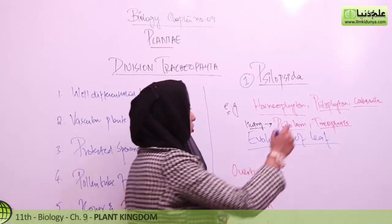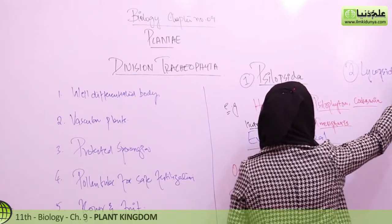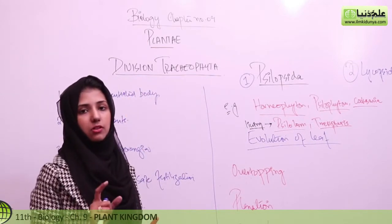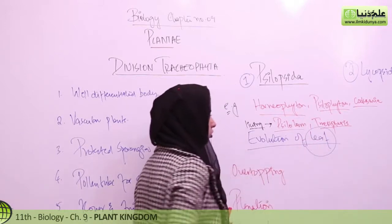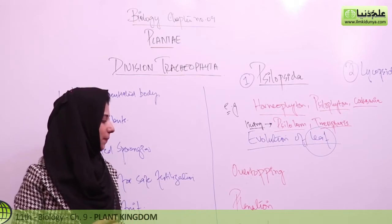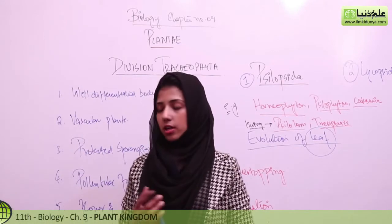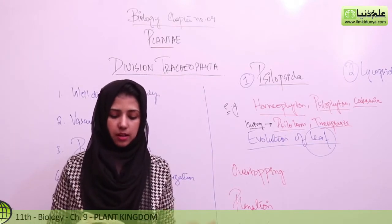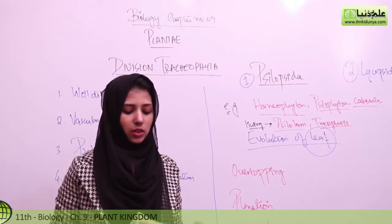The second part of this division is Lycopsida. In Lycopsida, true leaves were present. The evolution from Psilopsida to Lycopsida involved leaf formation. Leaf formation has three basic steps: over-topping, planation, and fusion and webbing. The evolution of the leaf is an important topic. Lycopods were the first plants that formed true leaves and roots.